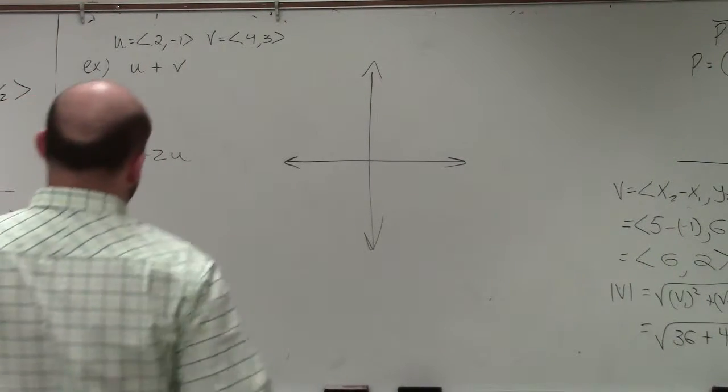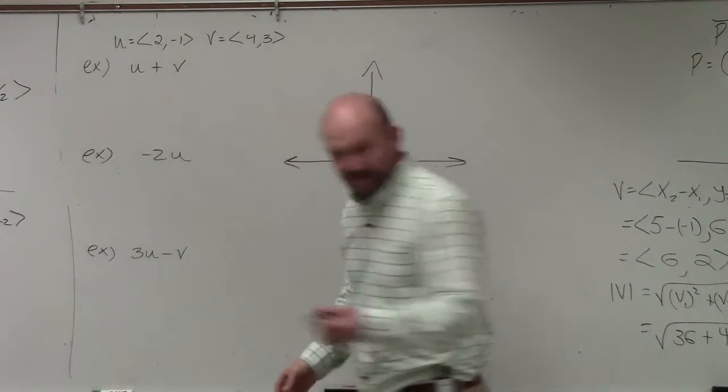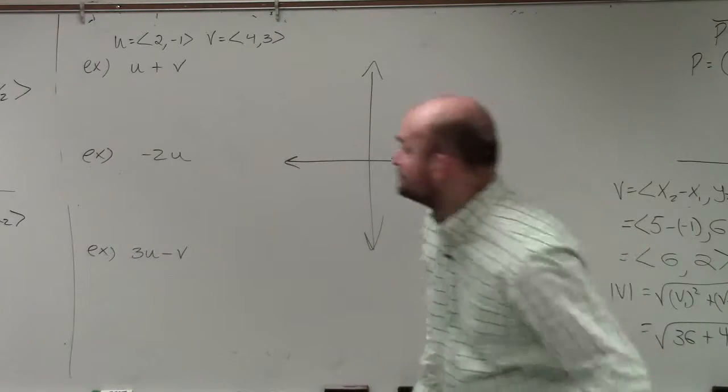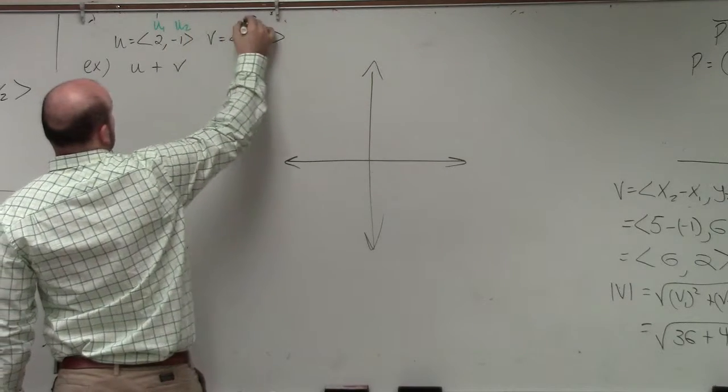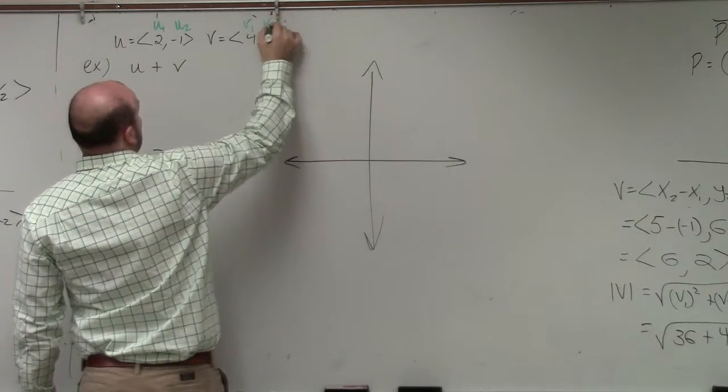So for instance, if I was going to do u plus v, basically, ladies and gentlemen, the best thing that I would do is identify if here's my vector u, I'd say this is u1, that's u2, v1, v2.